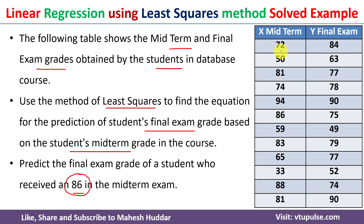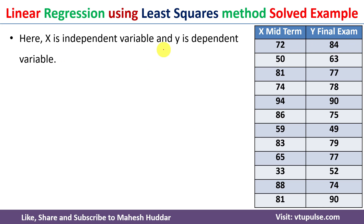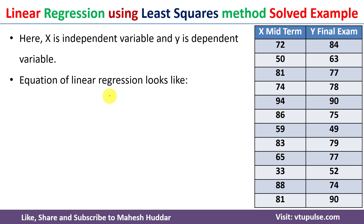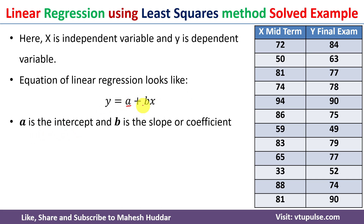In this problem, x will be the independent variable and y will be the dependent variable, because given the value of the midterm exam grades we need to find out the final exam grades. The equation for linear regression using the least square method looks like this: y is equivalent to a plus bx, where a is the intercept and b is the coefficient, or slope.